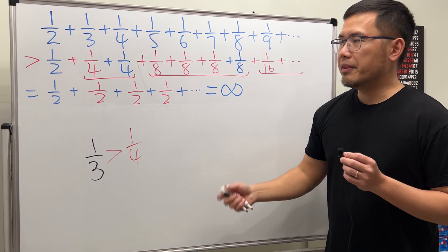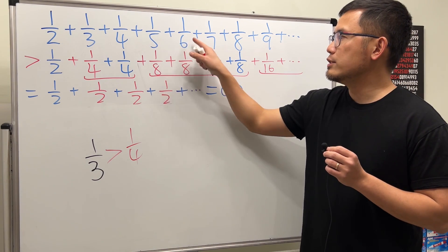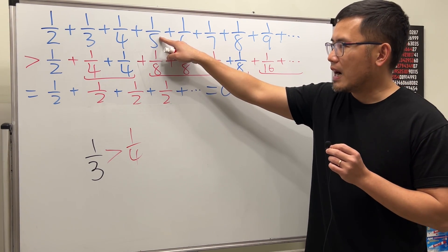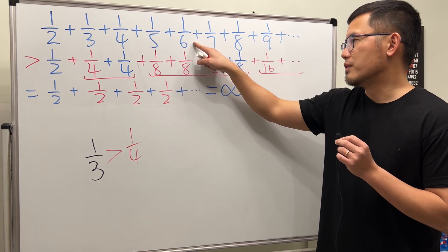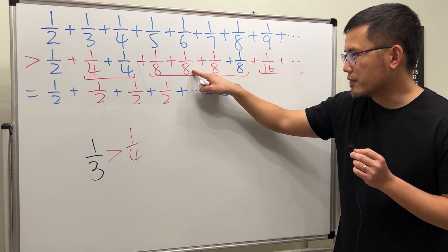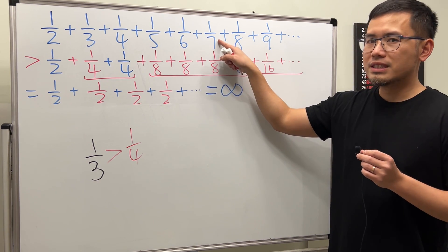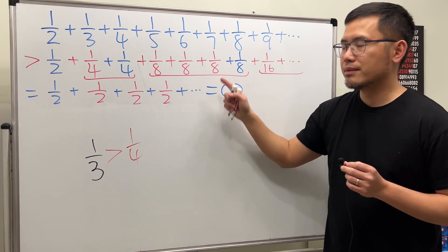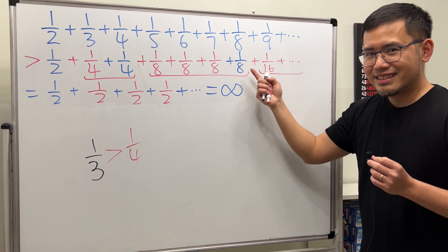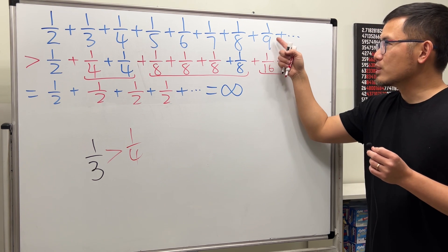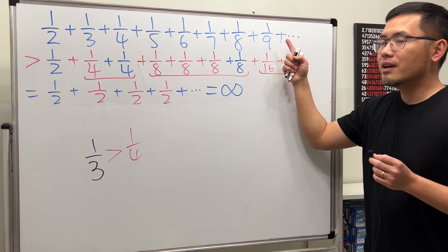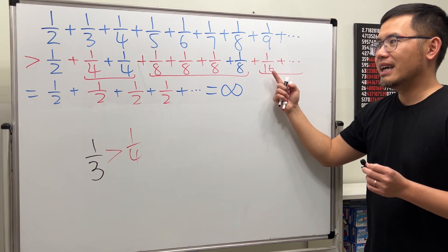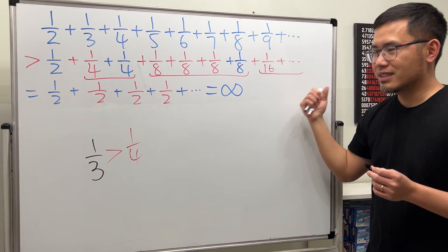In fact, we can do the same thing for these three numbers. 1 over 5 is greater than 1 over 8. 1 over 6 is greater than 1 over 8. 1 over 7 is also greater than 1 over 8. 1 over 8 is 1 over 8. And then next, 1 over 9 is greater than 1 over 16, and so on.